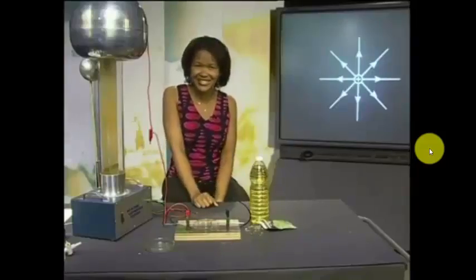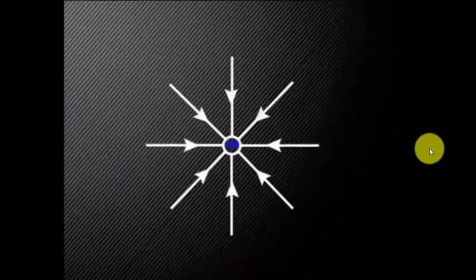What do you think the electric field lines would look like if the conductor was connected to the negative terminal of the Van der Graaf generator? Why don't you try drawing a sketch to show the pattern of these field lines? Were you right? Check that your arrows are pointing in the right direction.